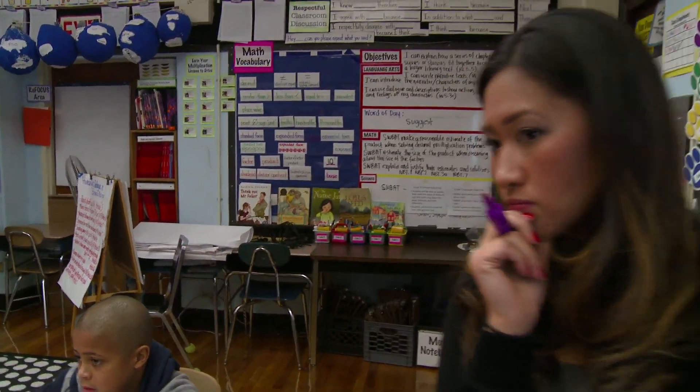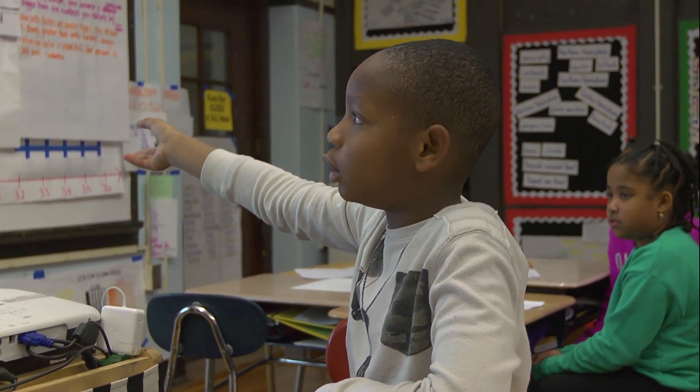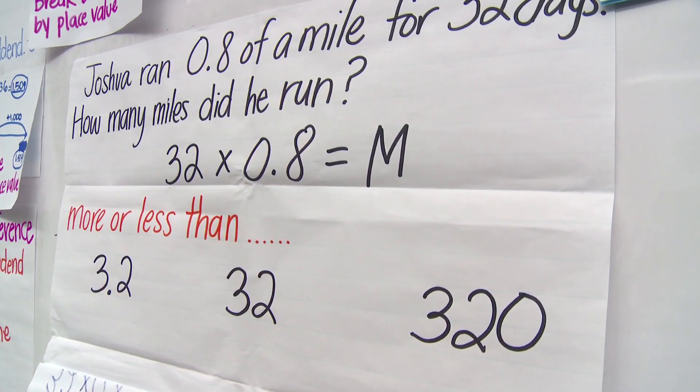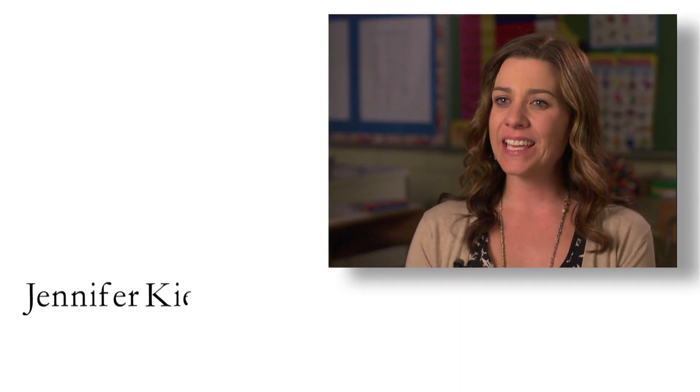This makes sense not only from the point of view of what division means, but it also addresses the mystery of why, when you divide a fraction less than 1 by a fraction less than 1, you can get a number bigger than either of those fractions. For instance, 32 times 1 whole would be 32, but 0.8 is less than 1 whole, so the result will be less than 32.